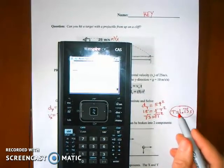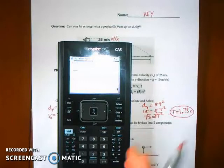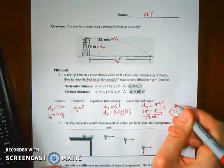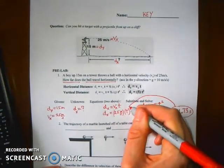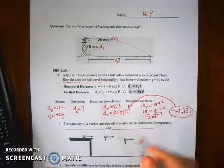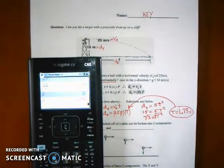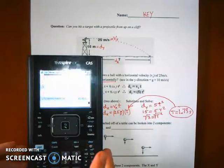And if that's the time it takes to fall in the y direction, it's also the same amount of time it takes to fall in the x direction. So we can substitute that time value right here. So what's 25 times 1.73? Take that answer, multiply it by 25, and I get 43.3.